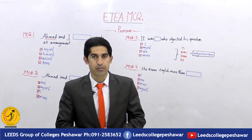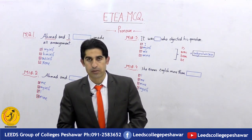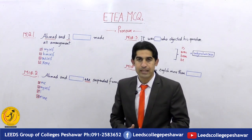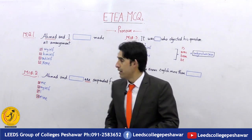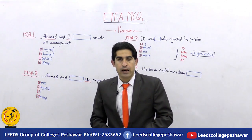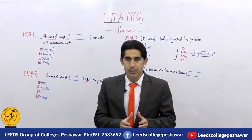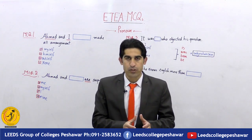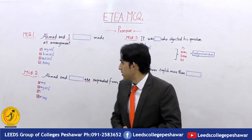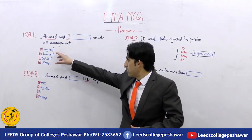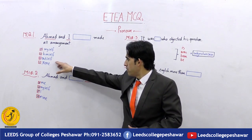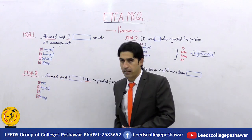Let's get on MCQ number one. The first MCQ is: 'Ahmad and I ___ made all arrangement.' We have four options — different cases of pronouns: number one, myself; number two, himself; number three, ourselves; and number four, none.